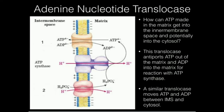Hopefully understanding the adenine nucleotide translocase gives you an idea of how ATP gets out of the matrix once we make it, and how ADP gets into the matrix when we need it to make ATP. It continually operates across both the inner and outer membranes, facilitating movement from the cytosol to the matrix for ADP, and from the matrix to the cytosol for ATP. Join us in the next video where we talk about a similar concept for the phosphate translocase.